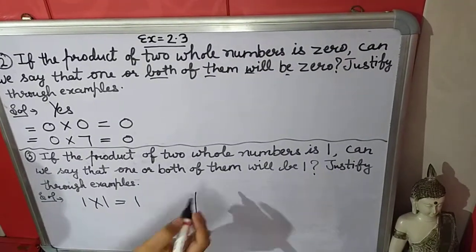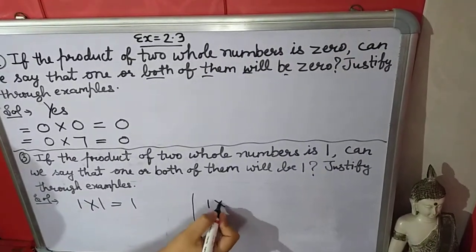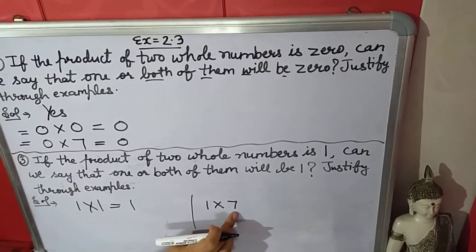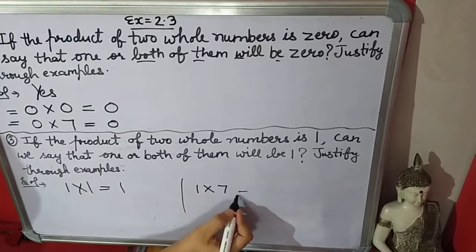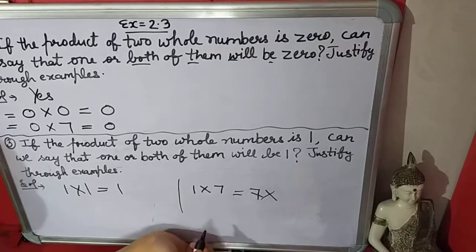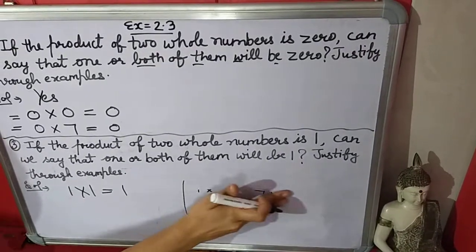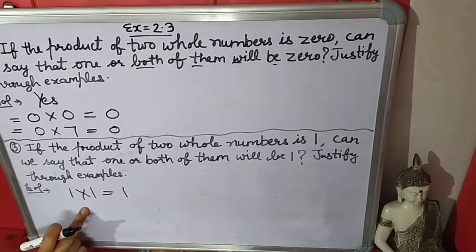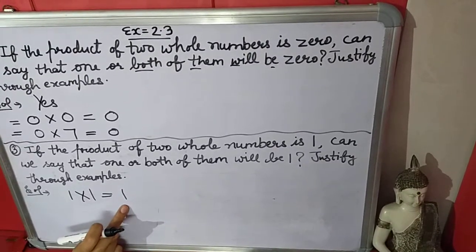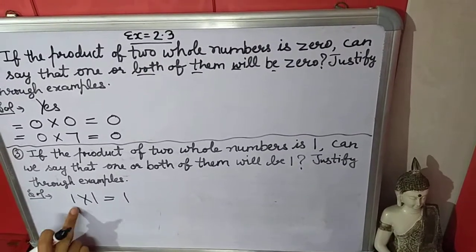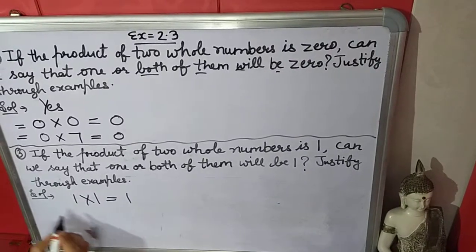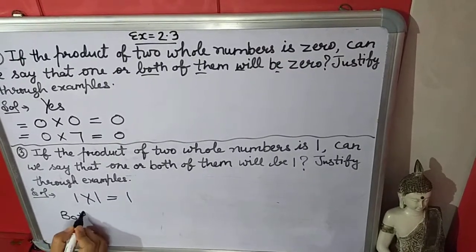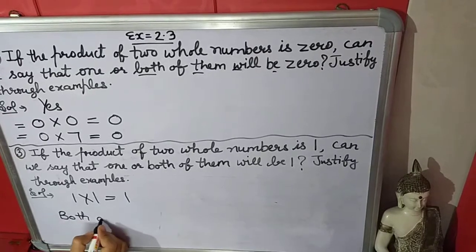So this case is only possible when both numbers will be one. There is only one case when we find the product as one, and that is when both of them will be one.